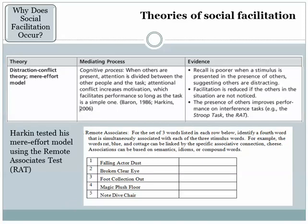Distraction conflict theory and mere effort theory are two theories that stress the cognitive processes playing an important role in creating social facilitation responses. Steve Harkins, in his mere effort model, suggests that in many situations the dominant response is the most immediate, rapid, and easily accessed response. In complicated situations that is not the correct response, and so it takes longer to shift from the near-automatic dominant response to the appropriate non-dominant response. Investigating this using the remote associates test, he finds strong evidence that the presence of others tends to increase performance of dominant responses, making performance on the remote associates test more difficult.